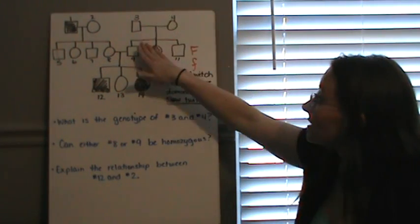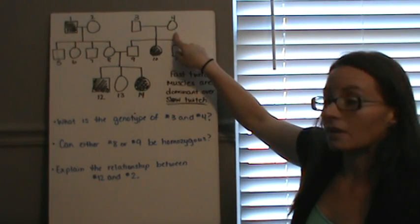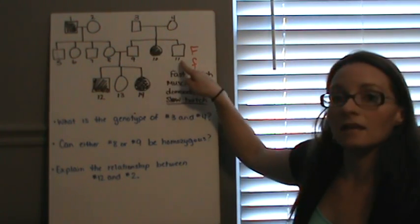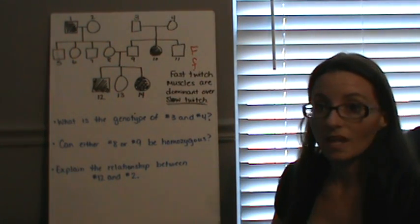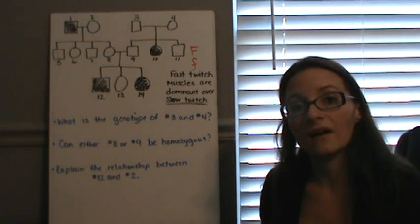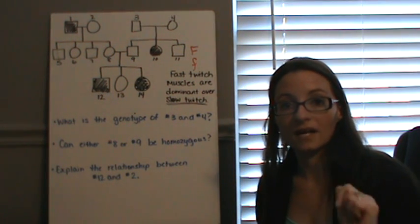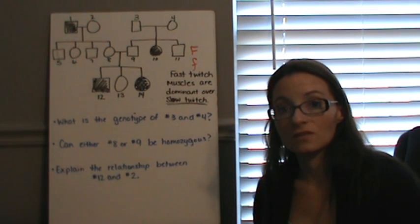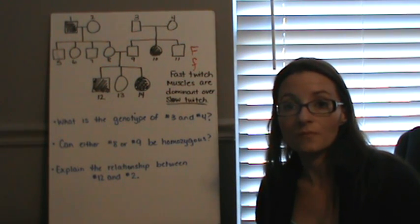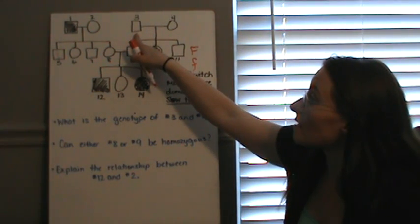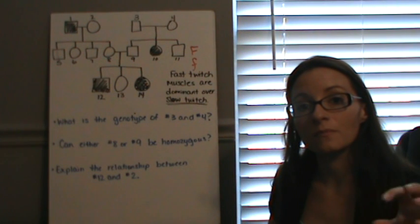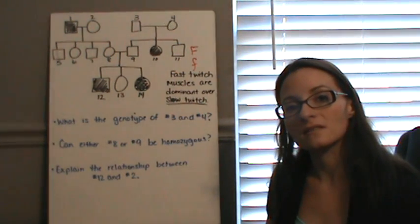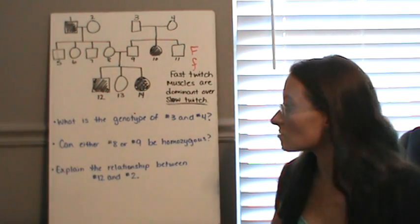To figure this out, we're going to look at their kids. So 3 and 4 are married; this line coming down shows they have kids, and the line going across connects their three kids: 9, 10, and 11 are the children of 3 and 4. Now, if any of them have slow twitch muscles, that means they have the genotype little f, little f, meaning they had to get a little f from mom and a little f from dad. Number 10 does — which means that 3 and 4 both have to have the genotype big F, little f, to show fast twitch muscles but to be able to pass on the slow twitch allele so the baby could have slow twitch muscles.